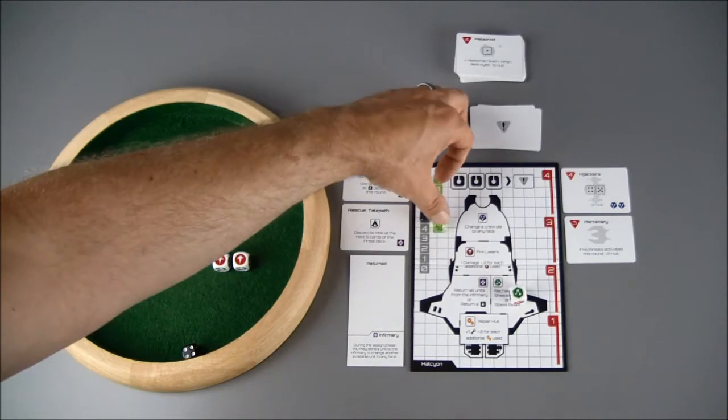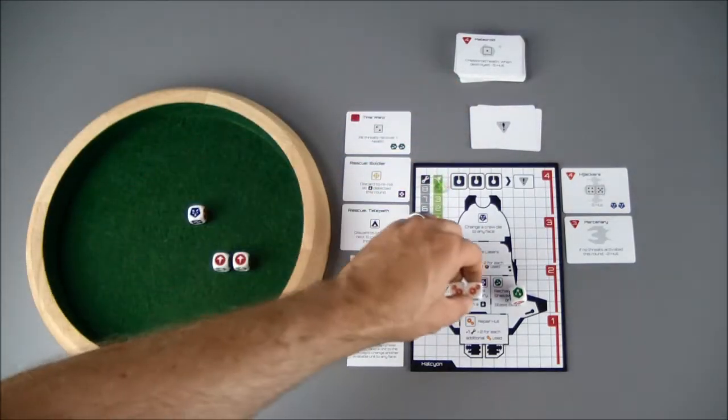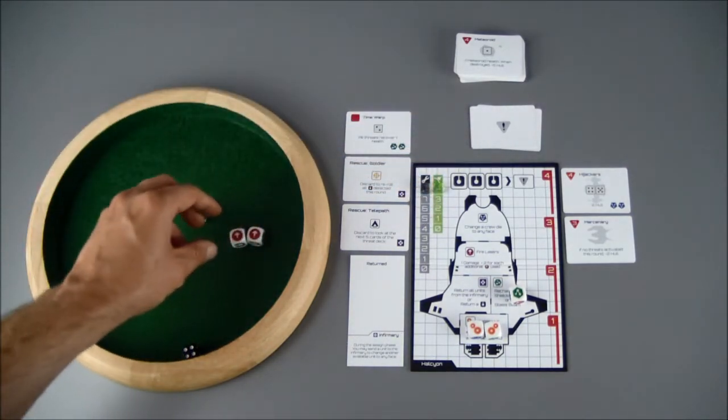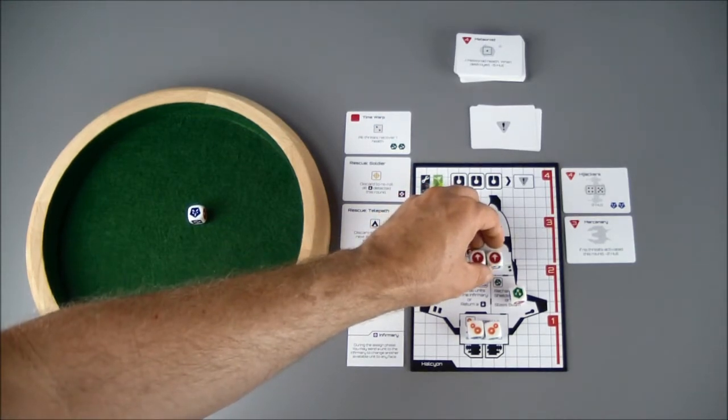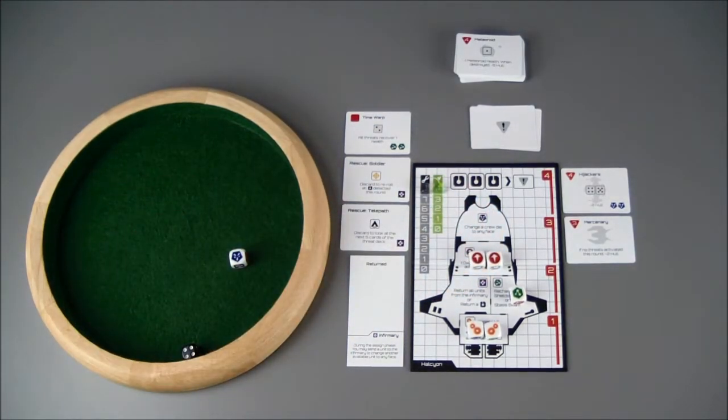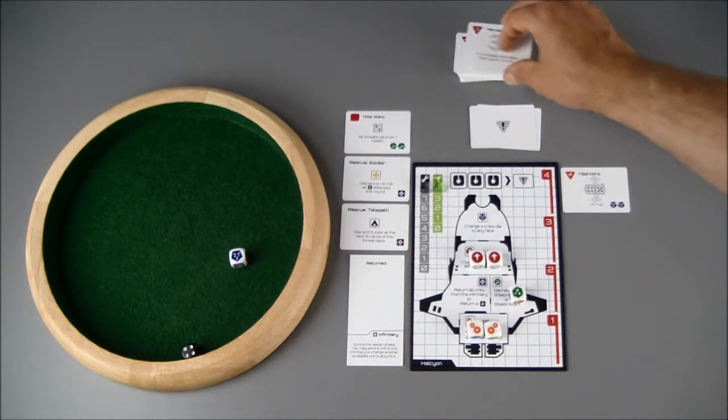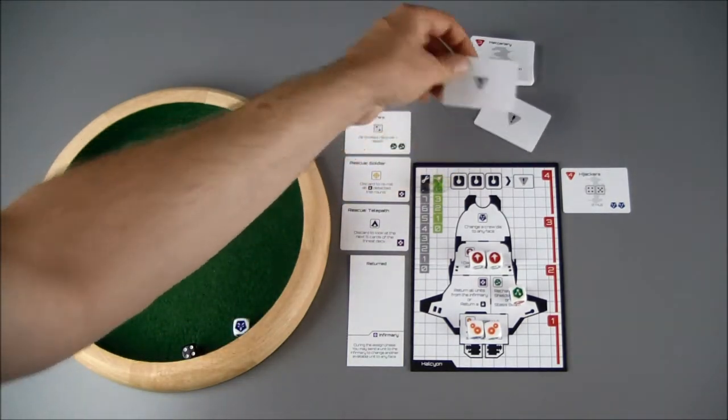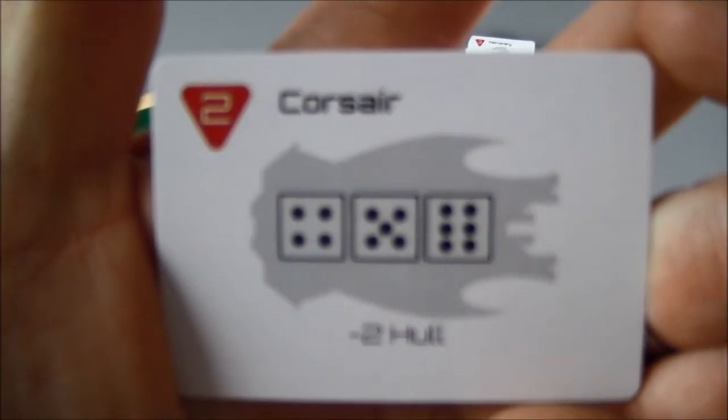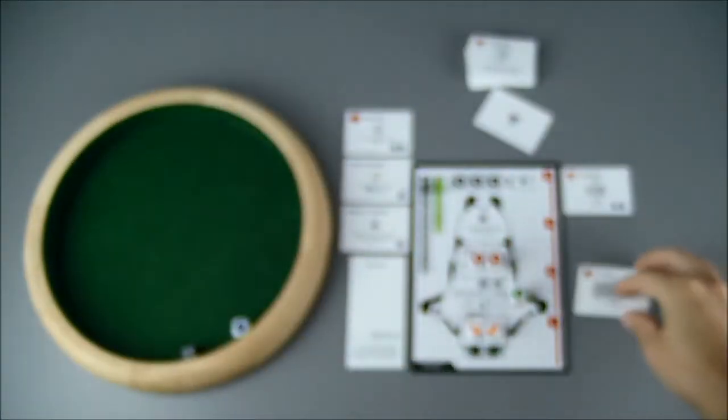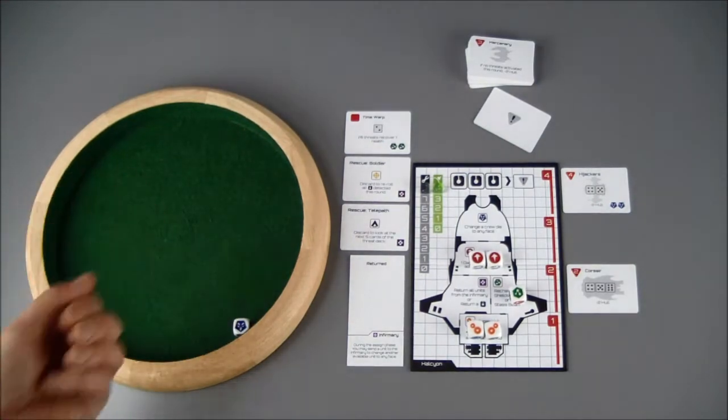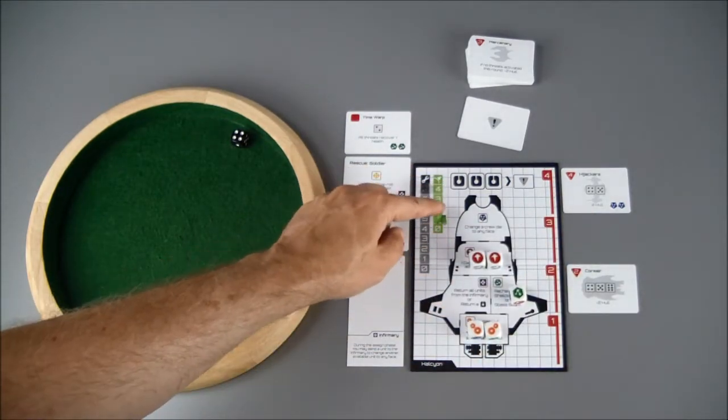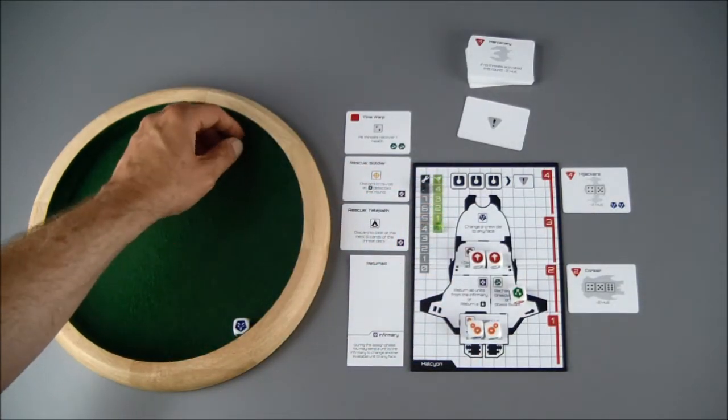So we can recharge our shields back up to four. Heal three from the engineering. Fix that hull back up so we're all fixed up there. I can do three with our lasers. Take that mercenary out. Can't do anything with the commander. Grab another threat and it's a Corsair that does two hull damage. And we got a four so that's gonna be four total. We'll wipe our shields back out. It's a good thing we have those shields.